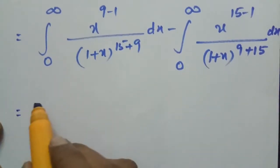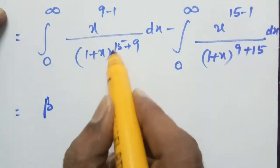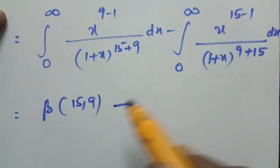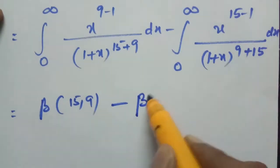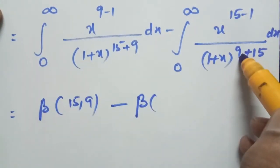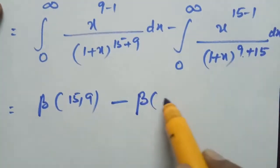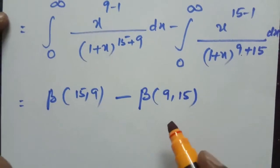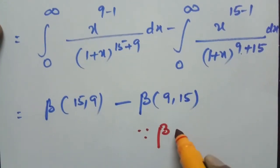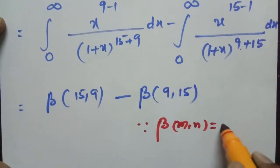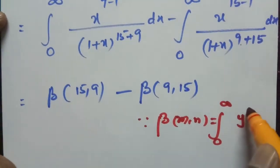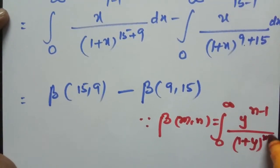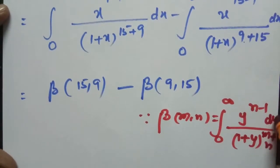Therefore, this is equal to beta(m, n) where m is 15 and n is 9, minus beta(9, 15). Since beta(m, n) equals the integral from 0 to infinity of y to the power (n minus 1) divided by (1 plus y) to the power (m plus n), dy. This is the formula.